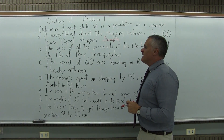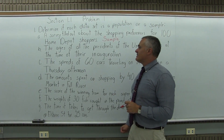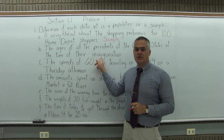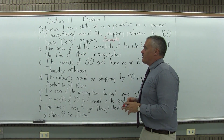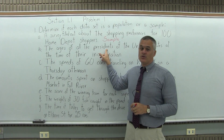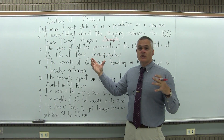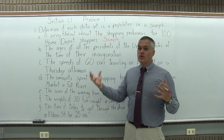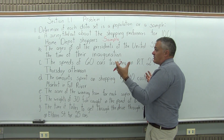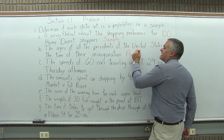The next one, part B: the ages of all the presidents of the United States at the time of their inauguration. Since there have been fewer than 50 presidents, you could examine them all. The entire group this study is interested in is all U.S. presidents and how old they were when they took office. You can look at the entire group, so that would be a population.